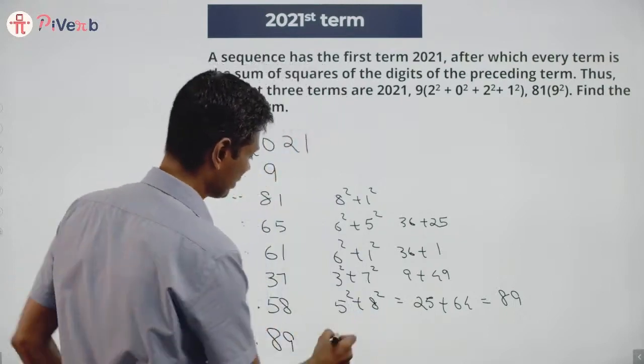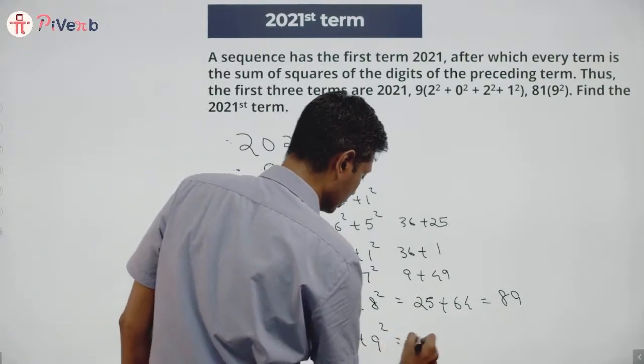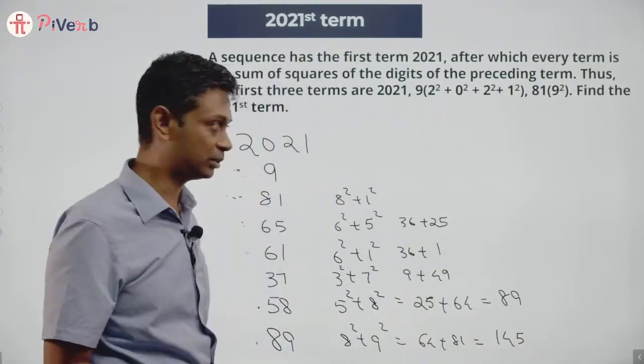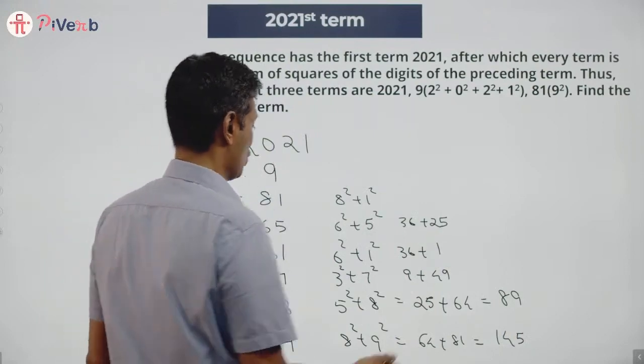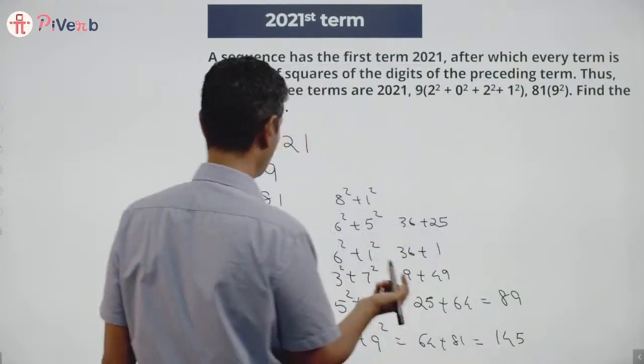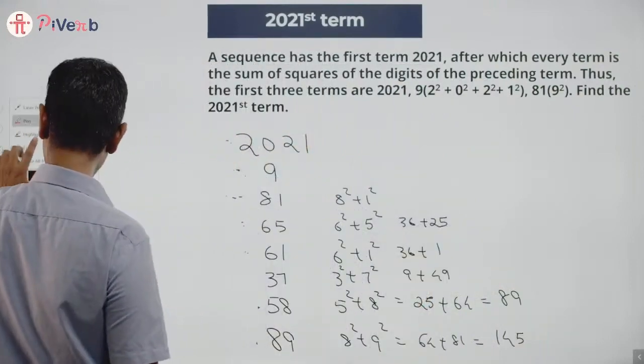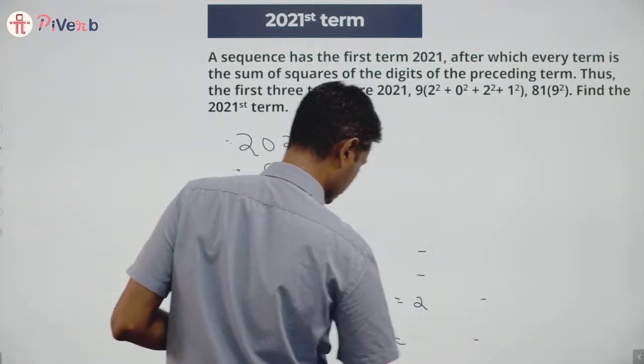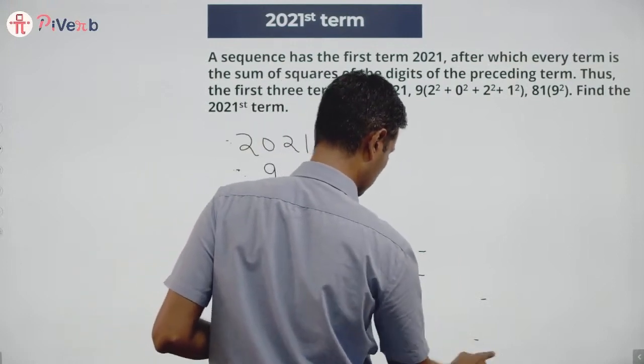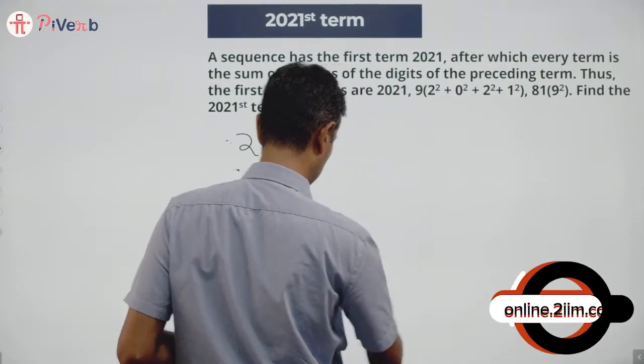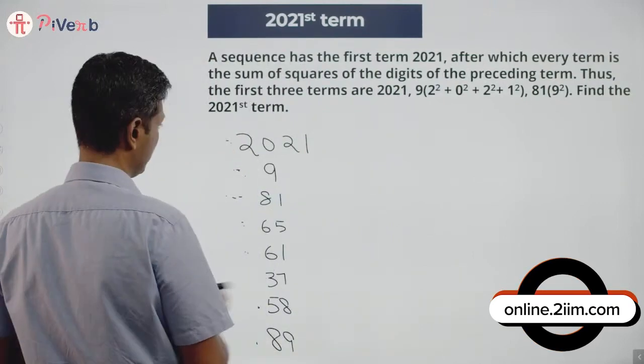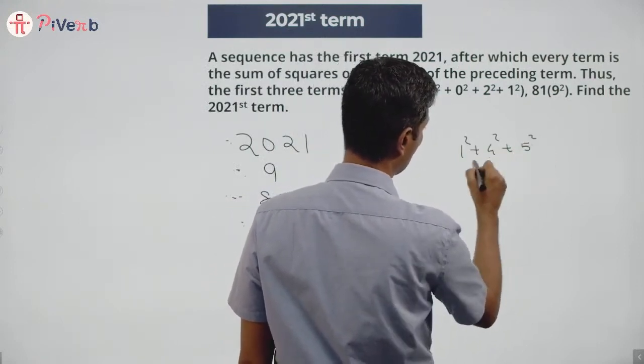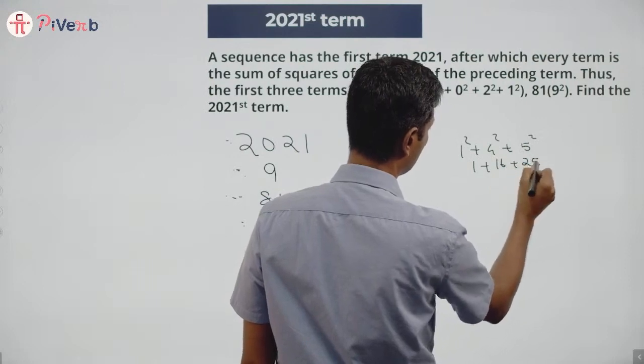89: 8² + 9² = 64 + 81 = 145. We have three-digit numbers now. 145: 1²... Next number after 145, I'm going to erase this side so we have enough space. All this we've done. I'm just squaring the previous term and adding.